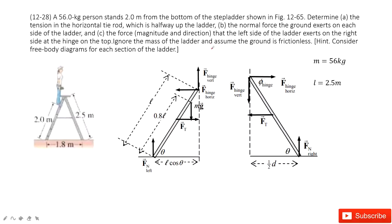Welcome to my channel. I am Zhang Zingshu. Let's look at problem 28 in chapter 12. Chapter 12 is about static balance. If we want to make sure one object is in static balance, it must satisfy two requirements: first, net force is zero; second, net torque is zero.